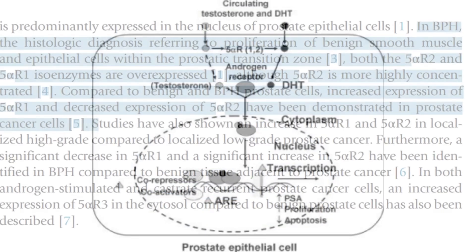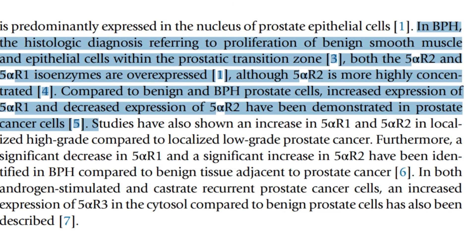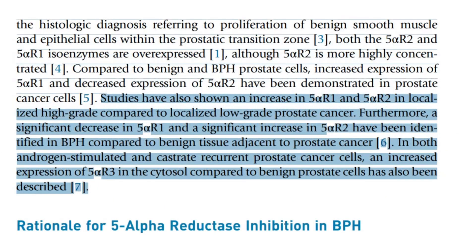In benign prostatic hyperplasia, there is an overexpression of both 5-alpha reductase type 2 and type 1, with a higher concentration of type 2. This overexpression is associated with the proliferation of benign smooth muscle and epithelial cells within the prostatic transition zone, contributing to the disease's clinical manifestations. In prostate cancer cells, however, there is increased expression of type 1 and decreased expression of type 2 compared to BPH cells.